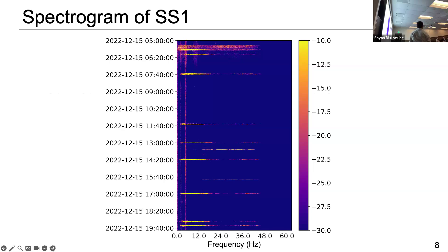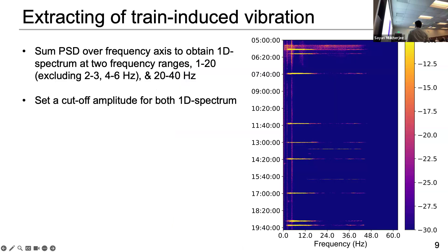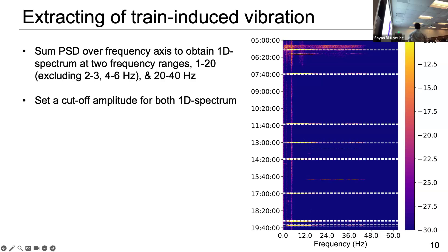This is a spectrogram from sensor one. The x-axis is frequency, the y-axis is time in UTC, and the color represents amplitude in decibels. You can see some signatures generated by different sources. The continuous one generated continuously in time is actually coming from the wind turbines. We also have vibrations generated by land vehicles — the cars — and then there are broader signatures from the trains, which are spikier than those from vehicles. The way we select the train-induced vibration is by summing over the 1–20 Hz and 20–40 Hz bands, then setting a cutoff amplitude and a few other parameters, which helps us detect the train arrivals.